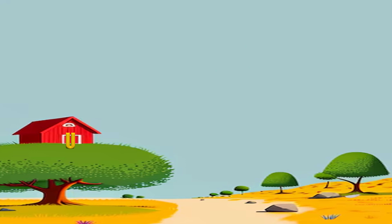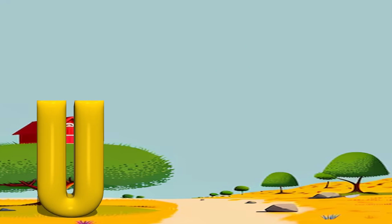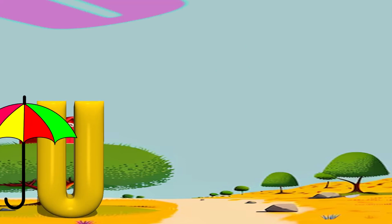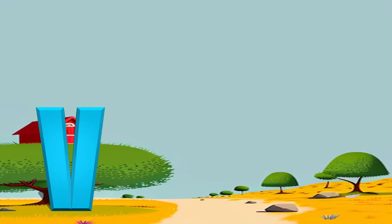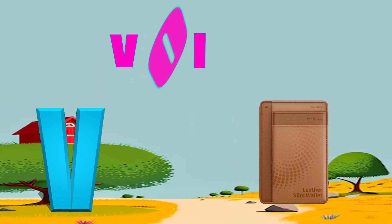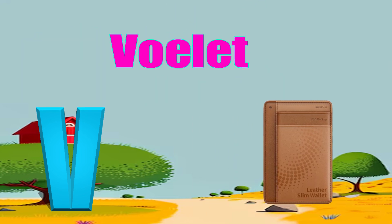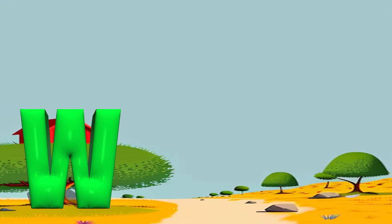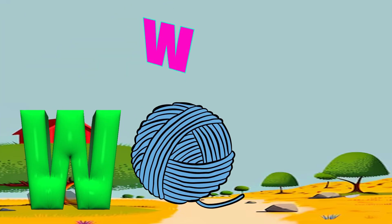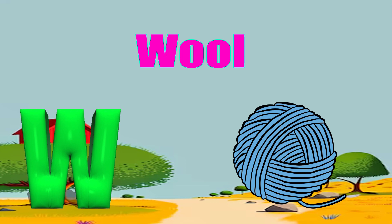U for umbrella. V for violet. W for wall.